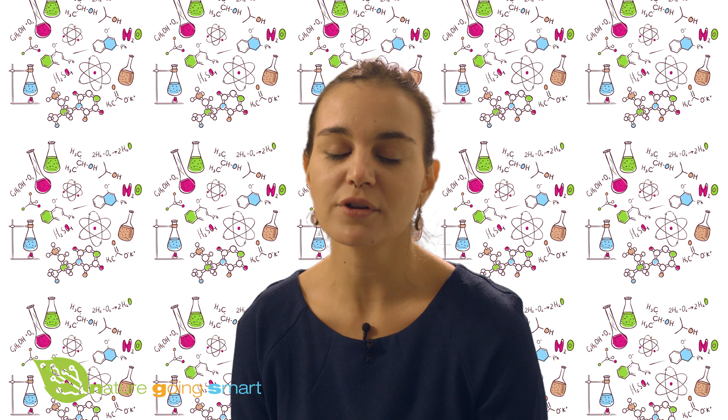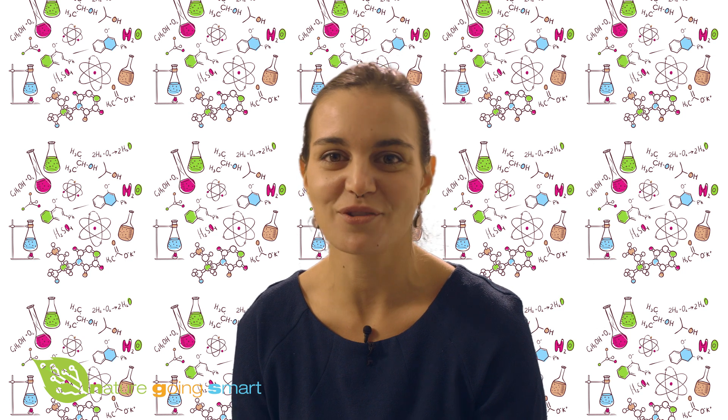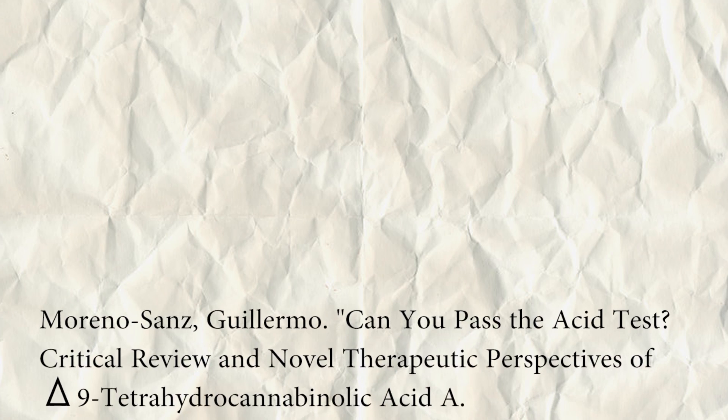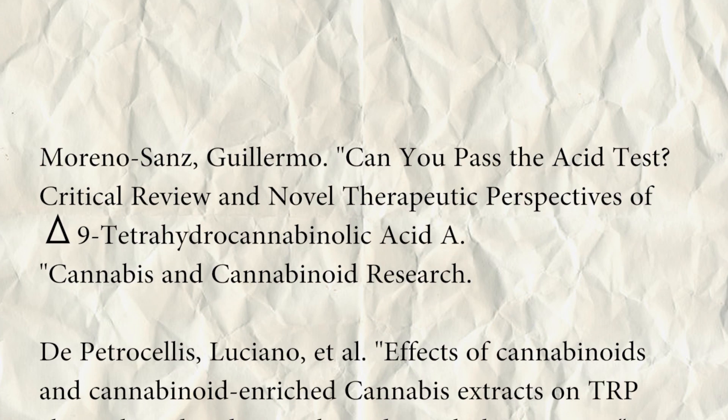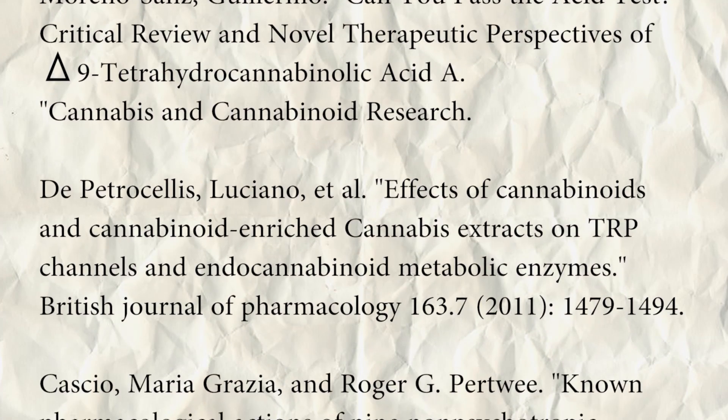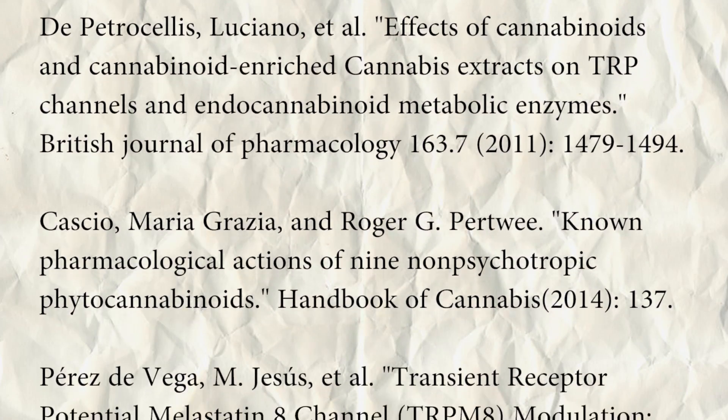If you are interested in knowing more about cannabinoid acids, we have a project called ROW — you can check it out at therowestudy.eu. We promote clinical trials with ROW cannabis juicing for, so far, multiple sclerosis, but we wish to extend this to other disorders. You can also check out naturegoingsmart.com for articles that review in much more detail the beneficial effects of cannabis juicing. Thank you.